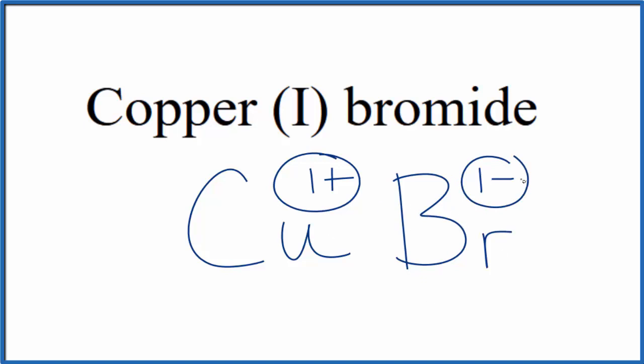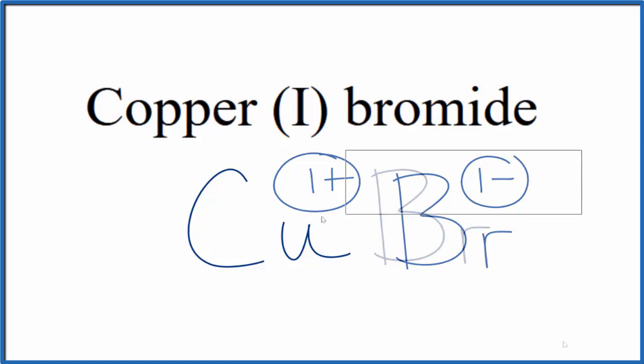So 1 plus, 1 minus, that adds up to zero. So this is the formula for copper 1 bromide, CuBr.